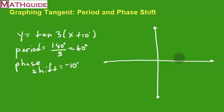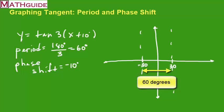Now this is 60, so I'm going to go 30 left and right from the origin. And I'm going to draw asymptotes, and I'm going to do that every 60 degrees. I'm going to draw another set of asymptotes.